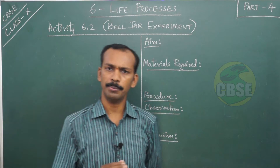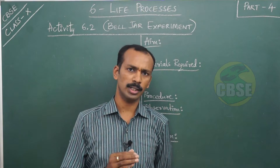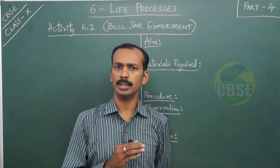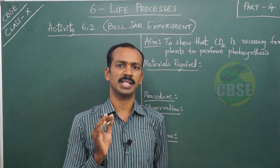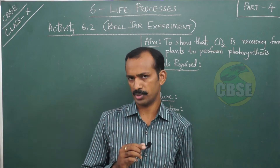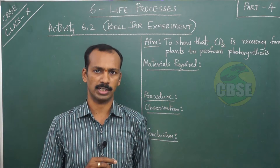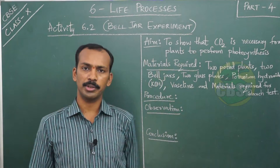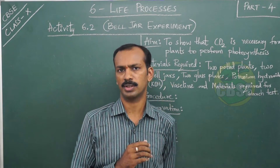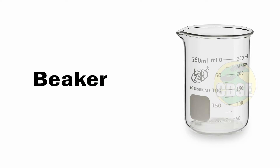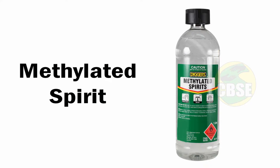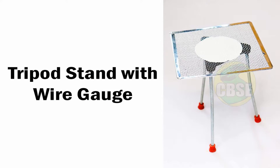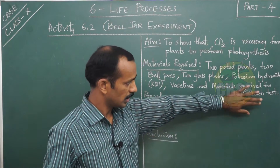The aim, materials required, procedure, observation, and conclusion. The aim of this activity is to show that carbon dioxide is necessary for plants to perform photosynthesis. The materials required include those used for the starch test from the previous activity: water bath, beaker, iodine solution, alcohol or methylated spirit, Bunsen burner, tripod stand, and wire gauge.